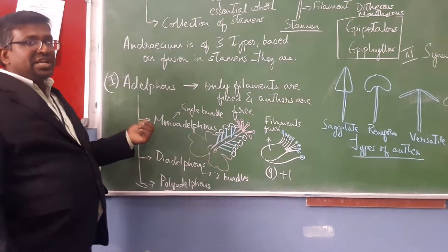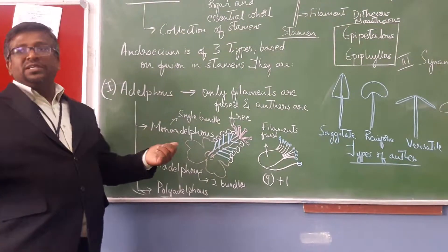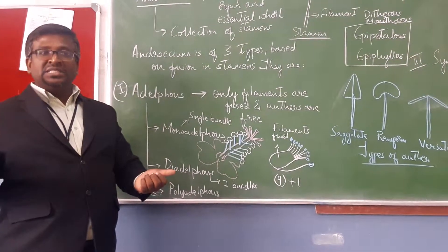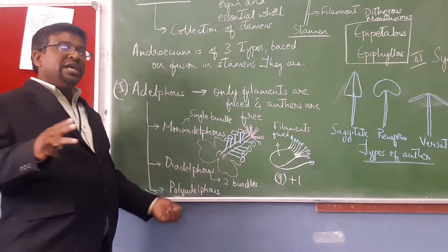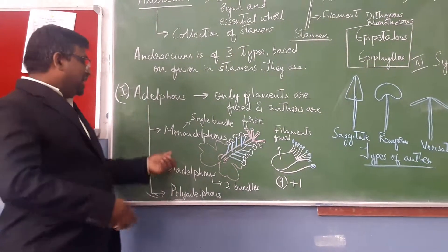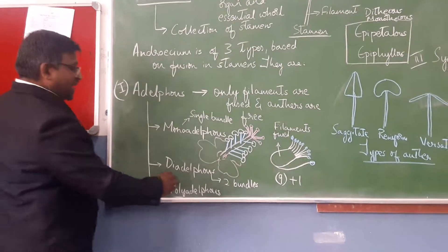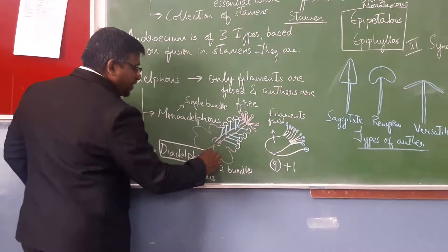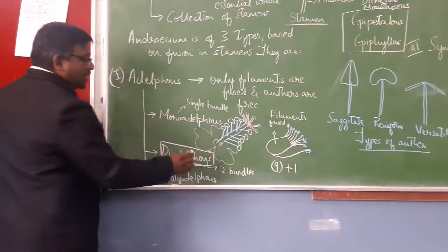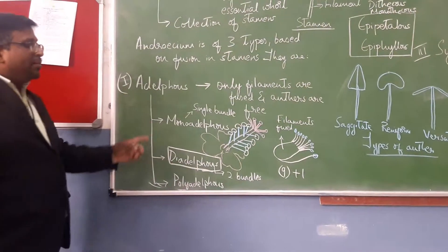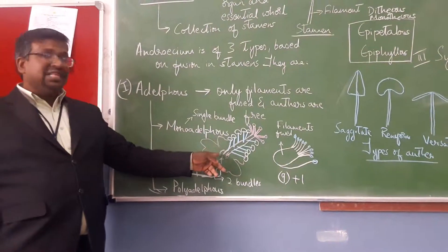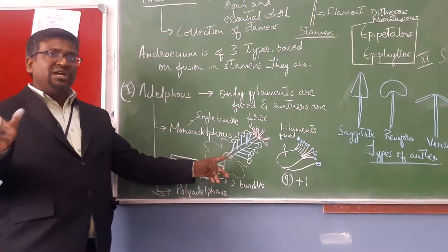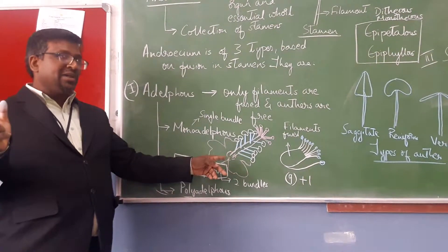Adelphous condition is of three types: monoadelphous, diadelphous, and polyadelphous. Monoadelphous condition can be noticed in the hibiscus flower, also called Daswada flower or China rose.